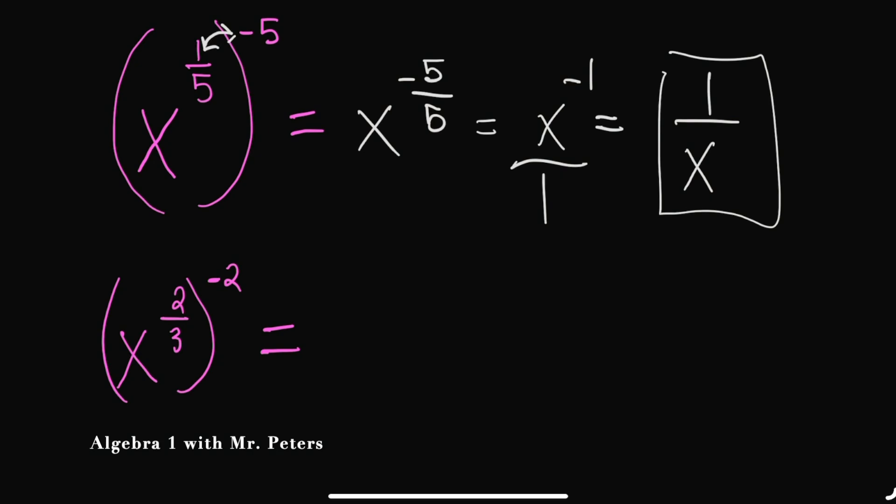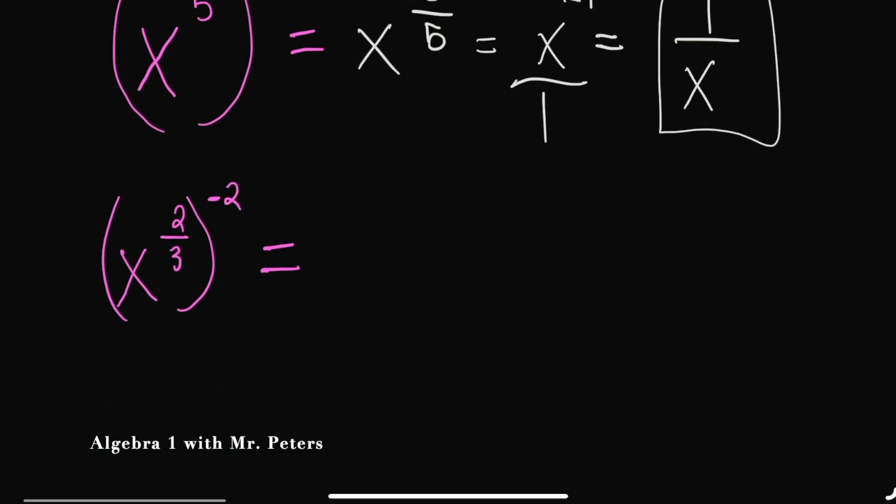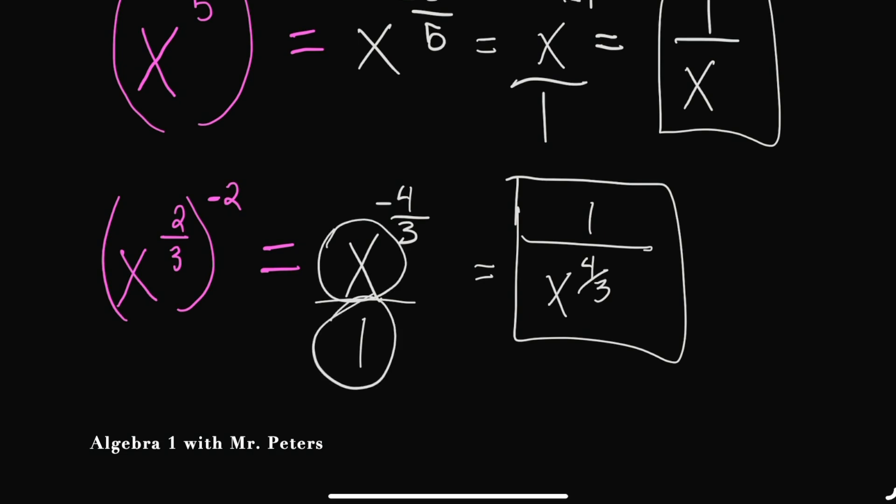Now let's go over to our next example. The same exact concept, we multiply. We're going to get X to the negative four over three. Can't have a negative exponent, so we turn into a fraction, take its reciprocal. We have one over X to the four over three. When you take the reciprocal, guys, you take the reciprocal of the base. So we're talking about X over one, not taking the reciprocal of the exponent. The exponent is going to stay the same. I just want to make sure we're on the same page with that, because I've seen that mistake happen before.